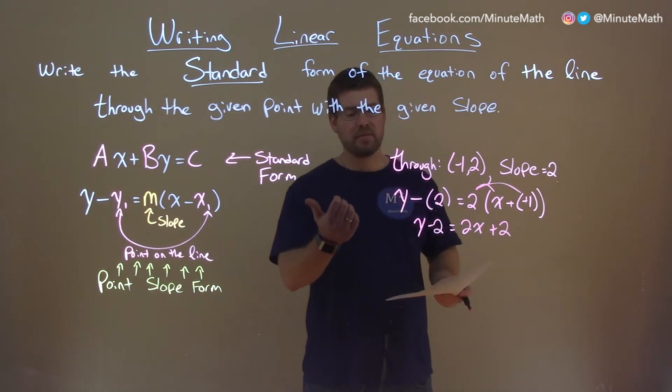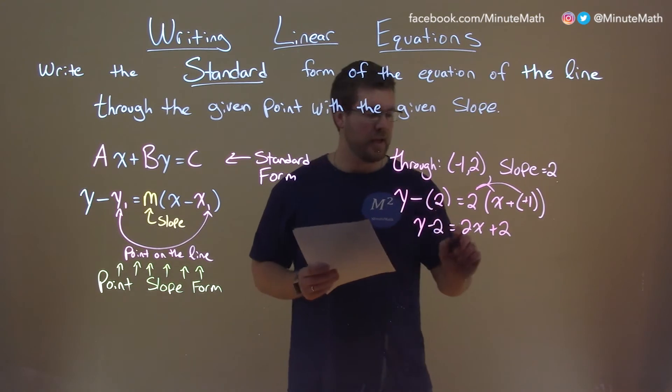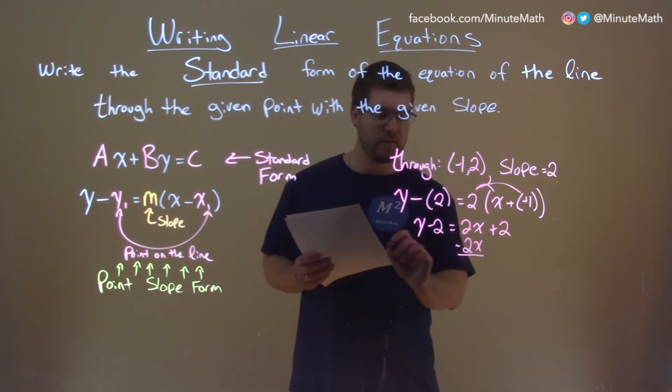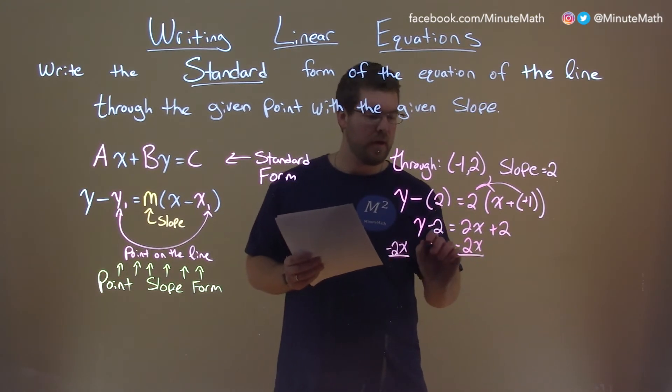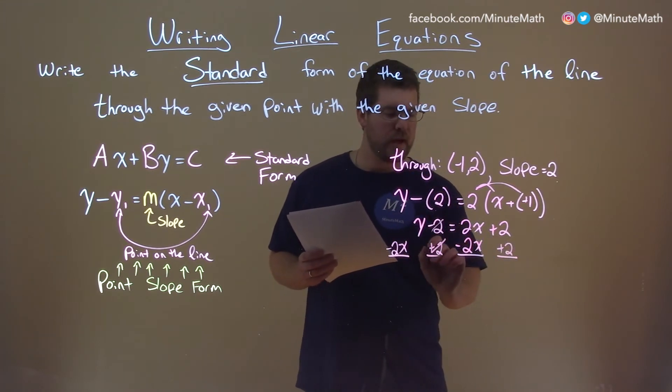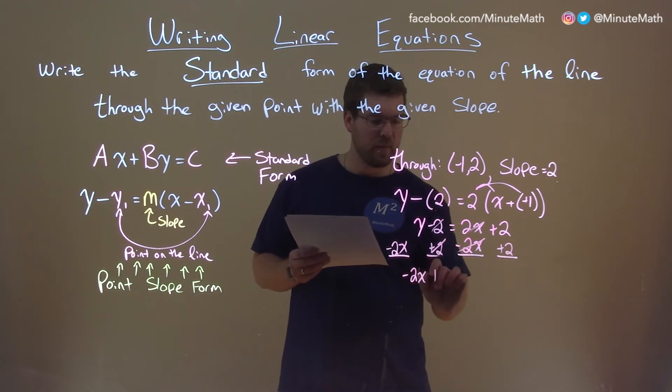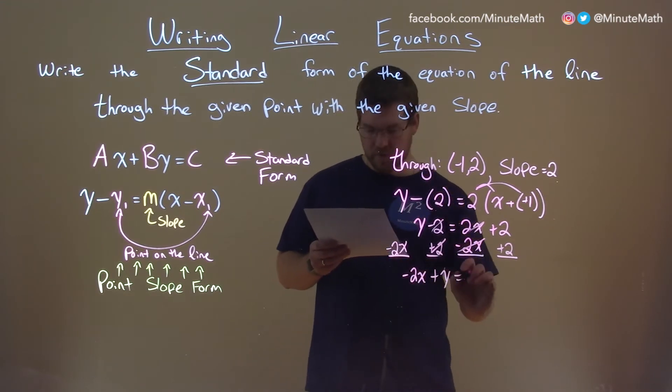So now let's get the x's to the left. The y's are already to the left, numbers to the right. Subtract 2x here to both sides, and we add a 2 to both sides. These 2's cancel, 2x cancels here. And we have minus 2x plus y equals a positive 4.